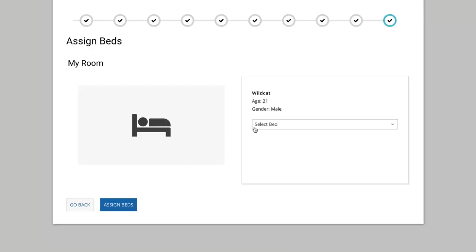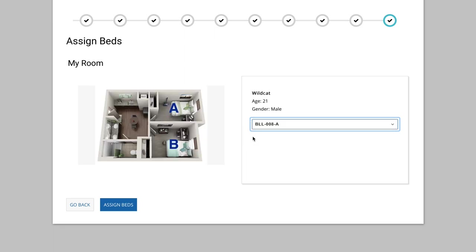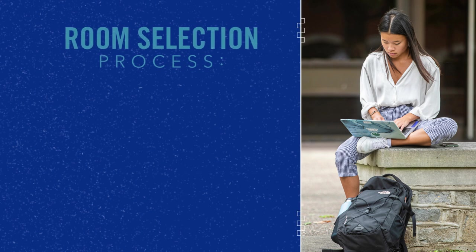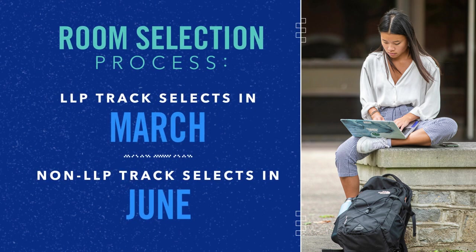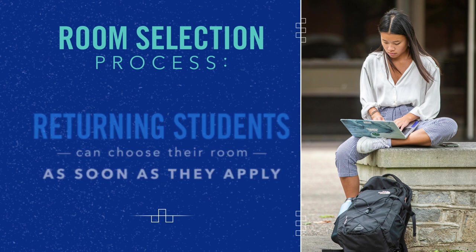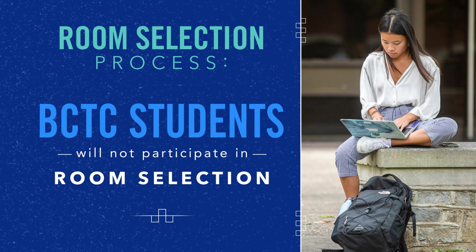UK students have the opportunity to choose their room through the room selection process. New students will select their room based on their application completion date, while returning students can choose their room as soon as they apply. You do not need to have a roommate to participate in room selection. BCTC students will not participate in room selection; instead, campus housing will manually assign eligible BCTC students.